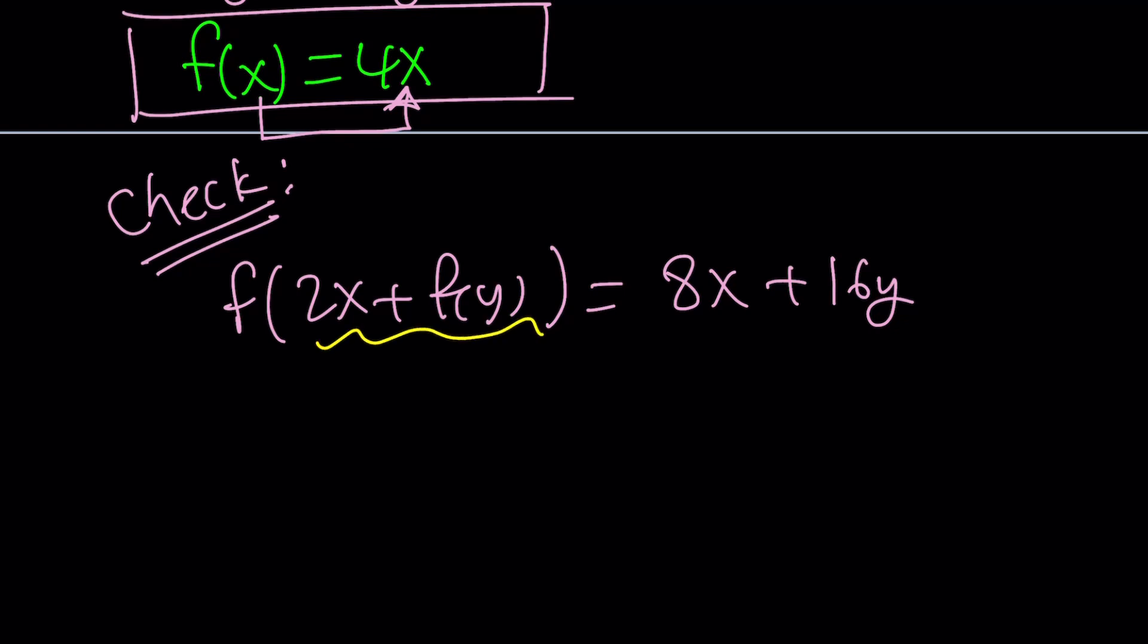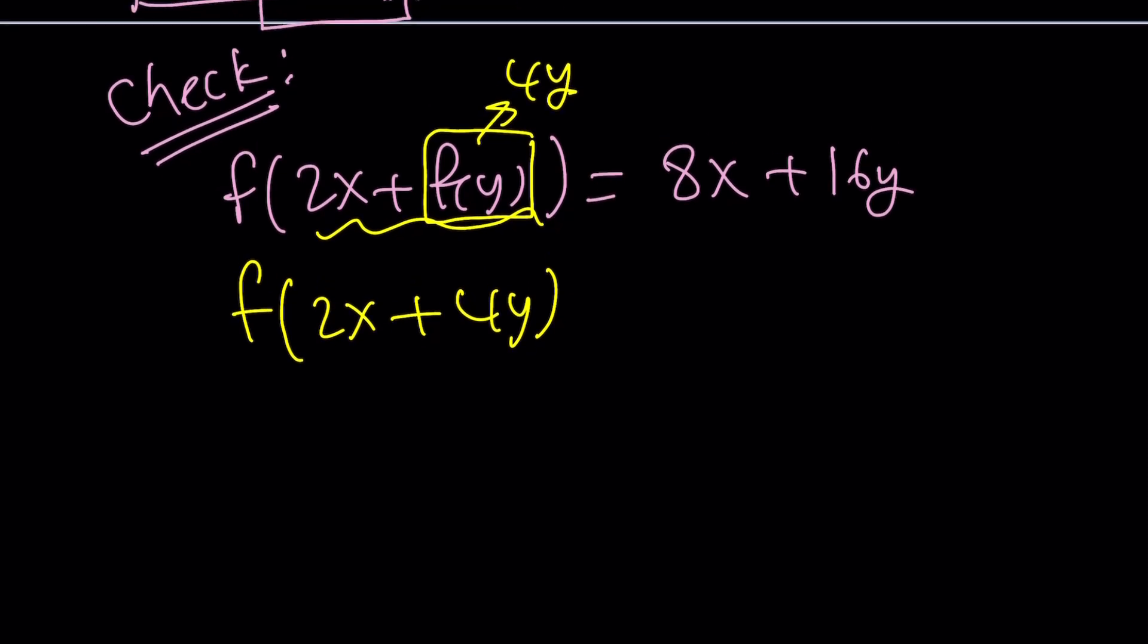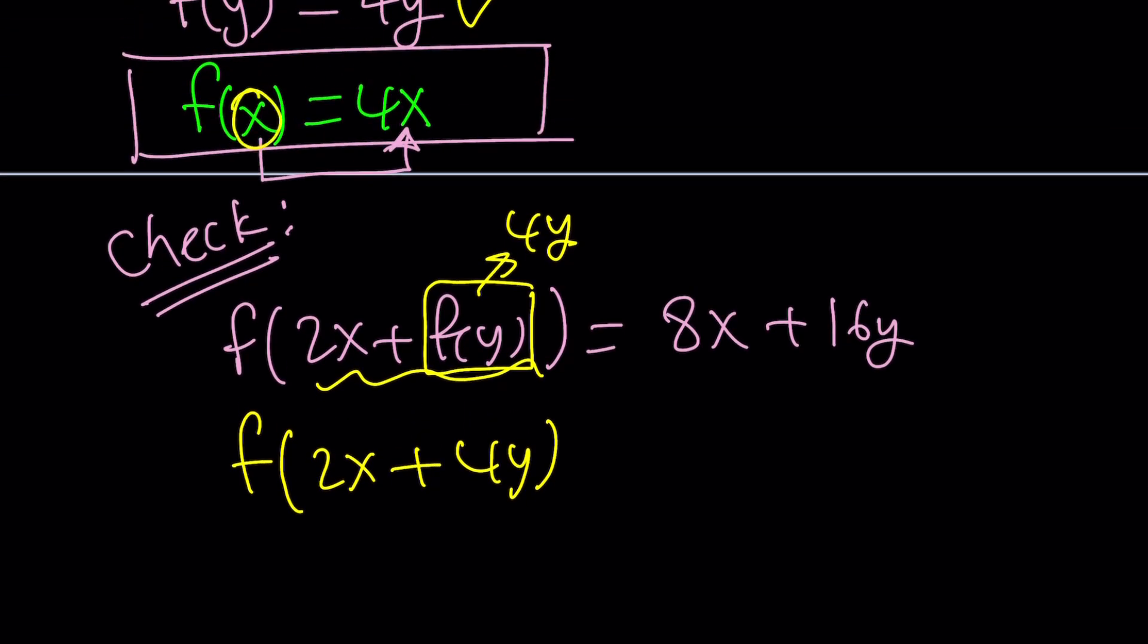So, in this case, our input is this one. But inside that input, we have another input, which is f of y. So, since f of x is 4x, and we already know that f of y is 4y, we can replace this with 4y, and write this equation again as f of 2x plus 4y. I'm not going to set it equal to the right-hand side yet, because I'm trying to check if this works. Now, what is f of 2x plus 4y? Again, replace x with 2x plus 4y, because that's the definition for the function. So, you're going to get 4 times 2x plus 4y. And guess what that's going to equal? That is going to equal 8x plus 16y.